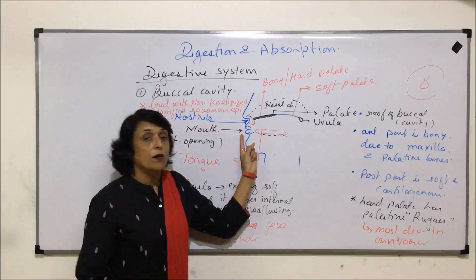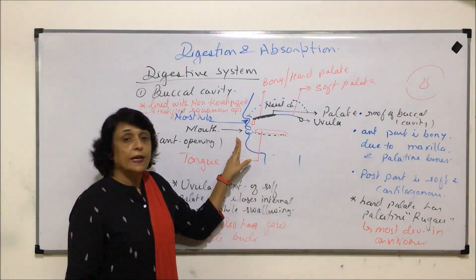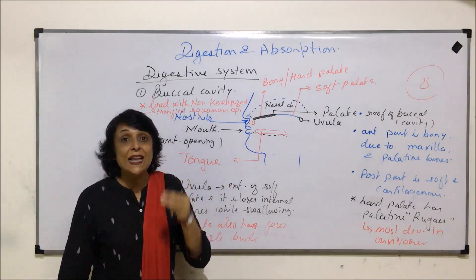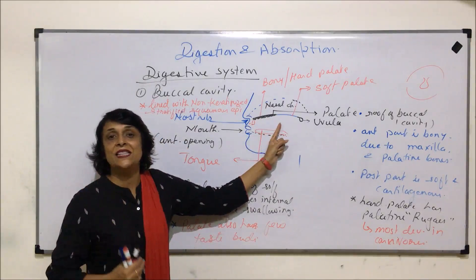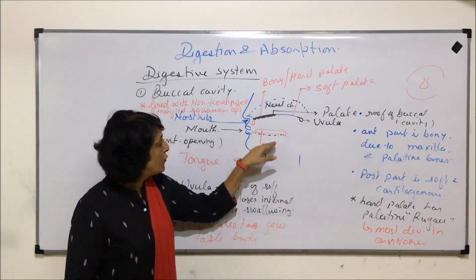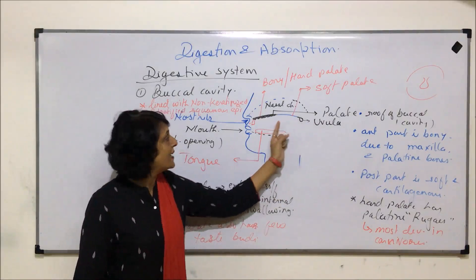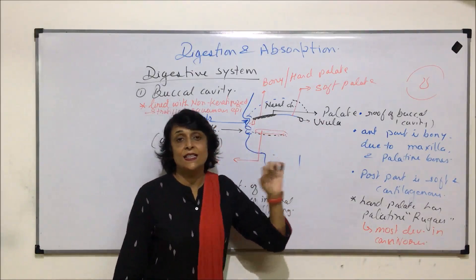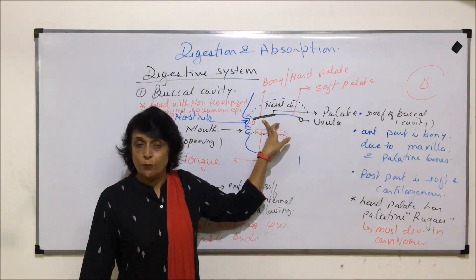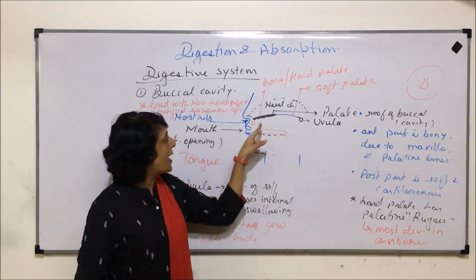Quick recap: as soon as we enter the mouth we come to a small area called the vestibule, which is between the lips and the teeth. Then the cavity behind the teeth is called the buccal cavity. The buccal cavity is bounded by the roof, which is made of the palate, the floor, which is the tongue, and on two sides there are the cheeks. The palate is divided into two parts based on its internal structure; the anterior part has bony support from two bones — the upper jaw or maxilla anteriorly, and the palatine bone.